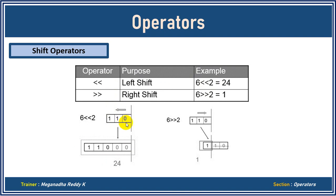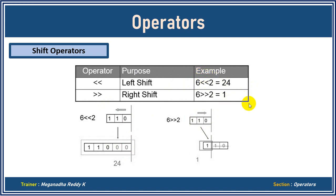We get 24, so 6 left shift 2 equals 24. All you have to do is convert 6 to binary, add two zeros, and convert back. For right shift: convert 6 to binary, then push to the right side and remove the two rightmost binary digits. Remember, left shift will always produce an answer bigger than the given number — 6 left shift 2 is 24, which is greater than 6.